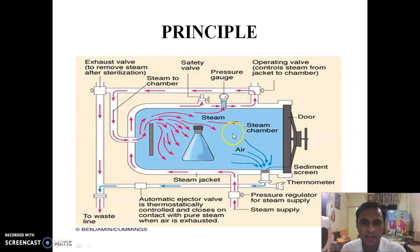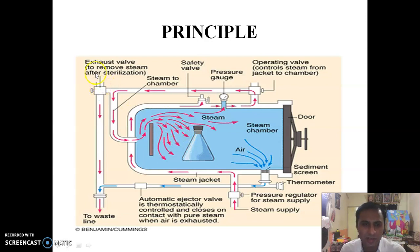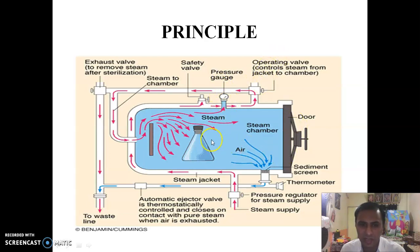Looking at this diagram, you can see how steam enters the chamber. Various points are labeled: the exhaust valve, steam chamber, safety valve, pressure gauge for regulation of pressure, operating valve, door, steel chamber, air inlet and outlet, pressure regulator, and atmospheric ejector.